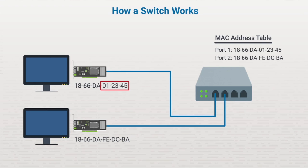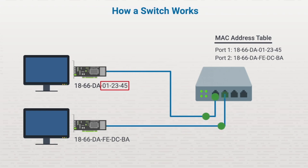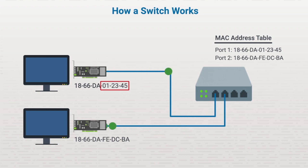This process continues until all devices connected to the switch are accounted for and the MAC address table is complete. When the MAC address table is complete, the switch can send data directly to the appropriate end device since the table defines which port each device is connected to. It's also important to know that switches are full duplex devices, meaning they can send and receive data simultaneously. This, along with data separation by port, reduces the chance of an Ethernet collision significantly and increases speed and efficiency.